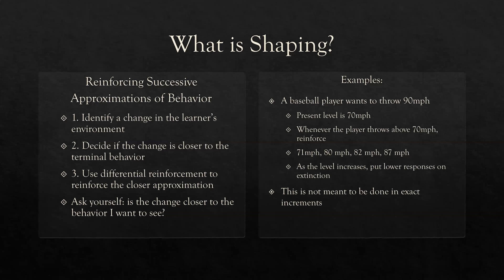This requires a really good, diligent eye. You really need to be observant of what behavior you're looking for. As we move closer to that final behavior, we're shaping and shaping, putting on extinction the behaviors that aren't closer. For example, a baseball player wants to throw 90 miles an hour. Their present level is 70 miles an hour. Whenever that player throws above 70 — 71, 80, 82, 87 — we reinforce. As the level increases, we put lower responses on extinction. If the player throws 71 when we're at 82, that goes on extinction. But if they throw 84, reinforce.